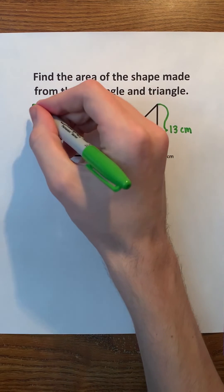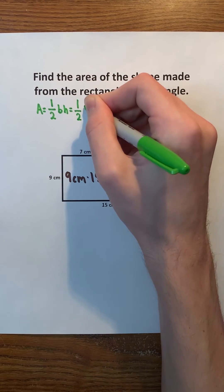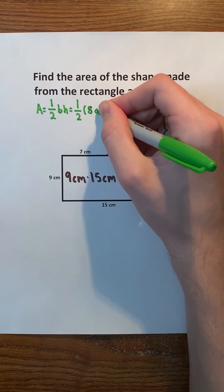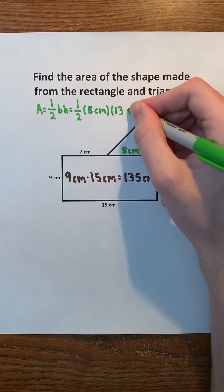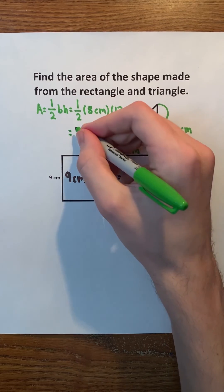Remember that the formula for the area of a triangle is 1 half times base times height. We know that the base is 8 centimeters and the height is 13 centimeters. 1 half times 8 is 4 and 4 times 13 is 52.